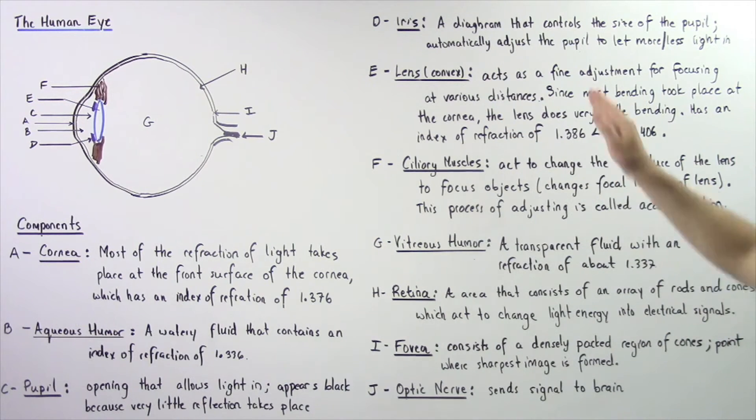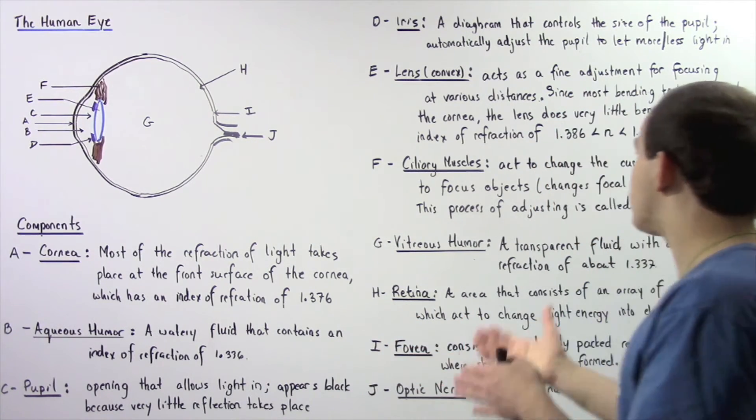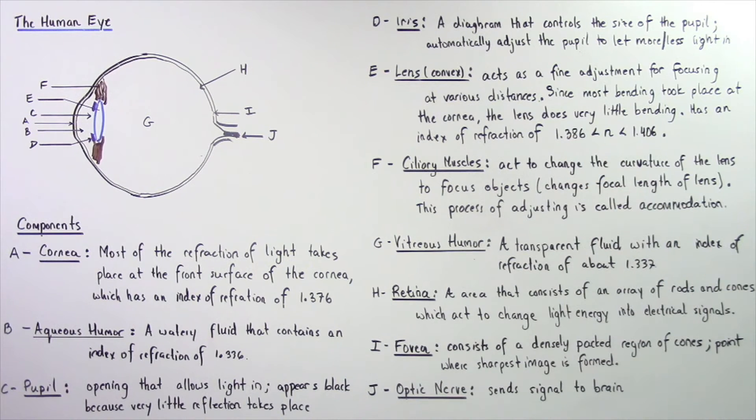Once again, the lens acts as a fine adjustment for focusing at various distances. Since most bending took place at the cornea, the lens does very little bending. Our lens has an index of refraction that varies from one person to another. It ranges between 1.386 to 1.406.